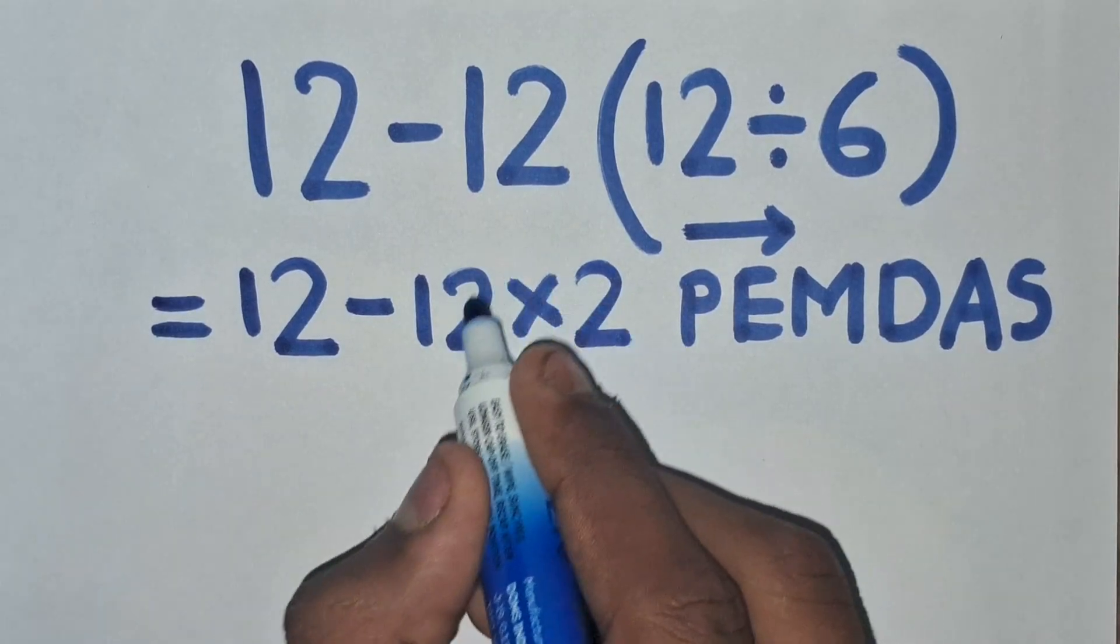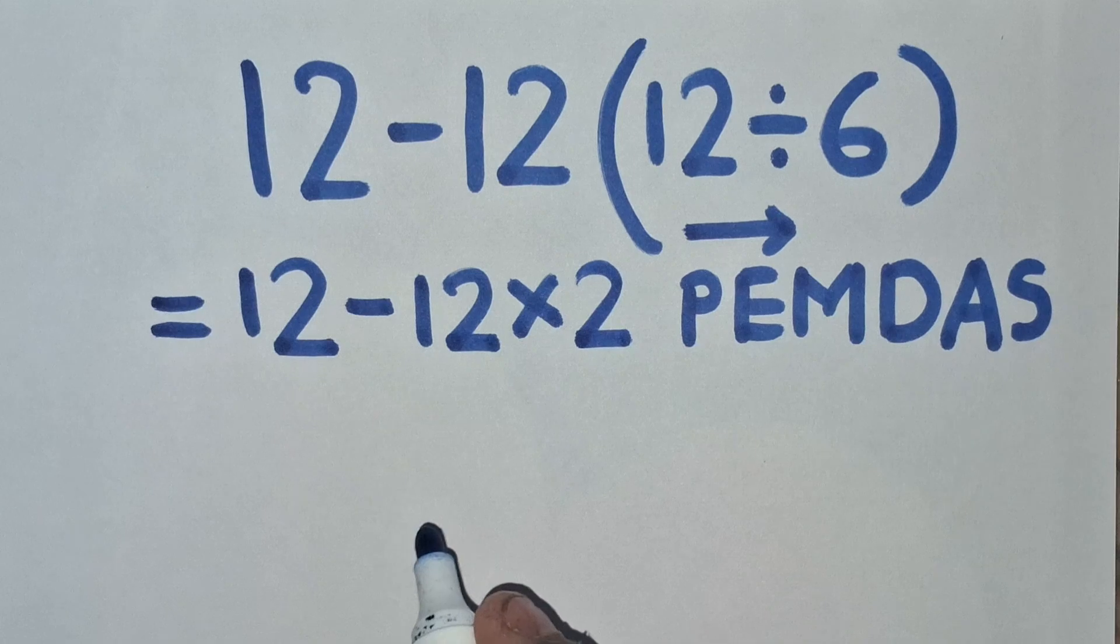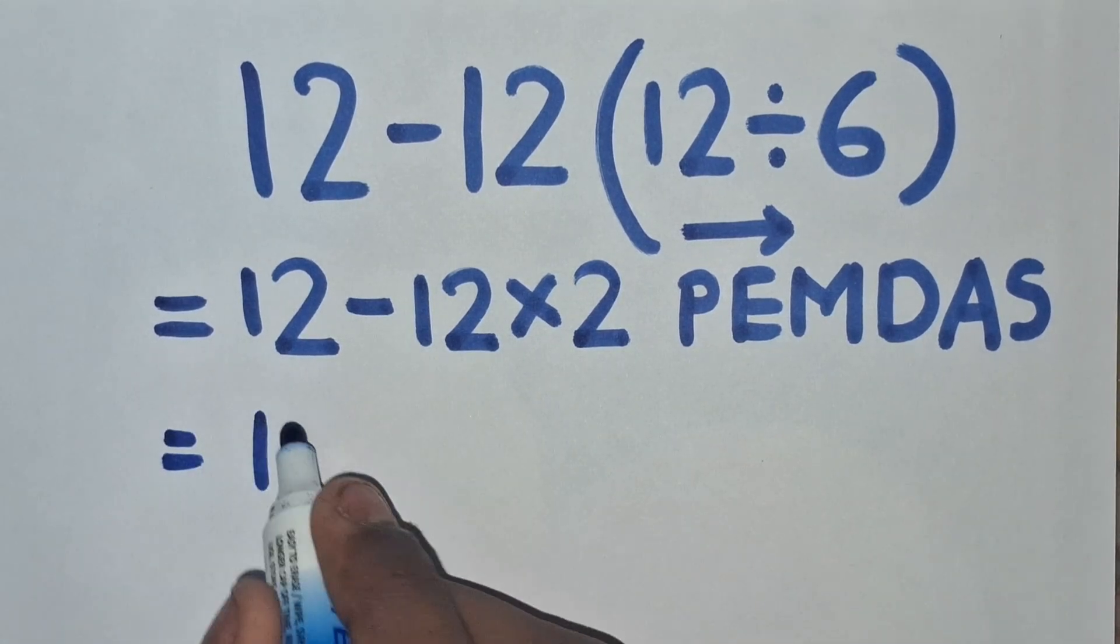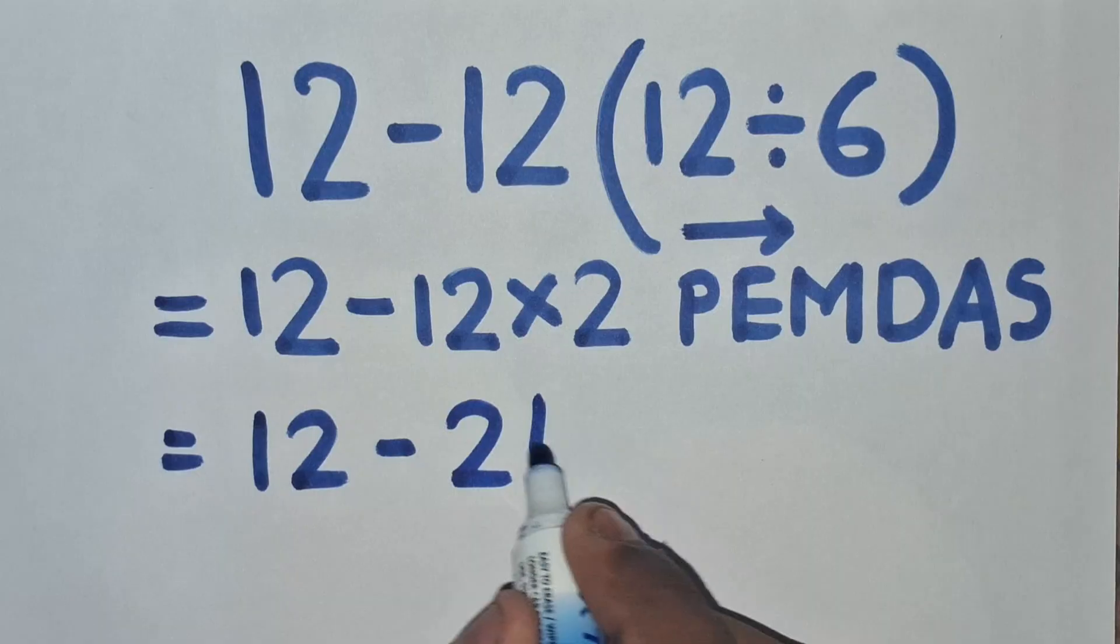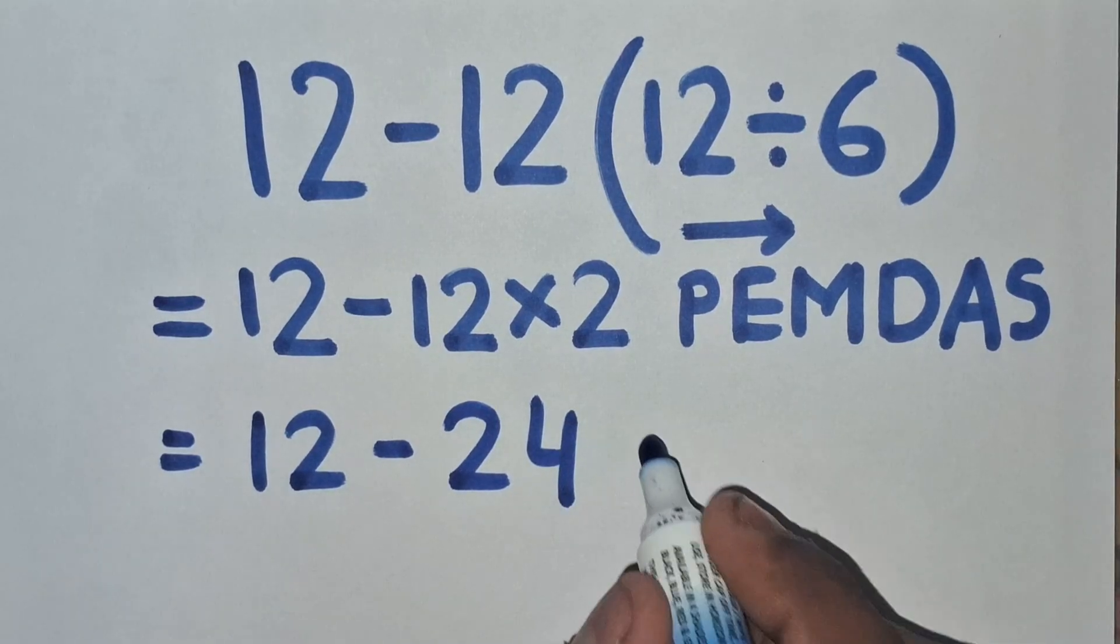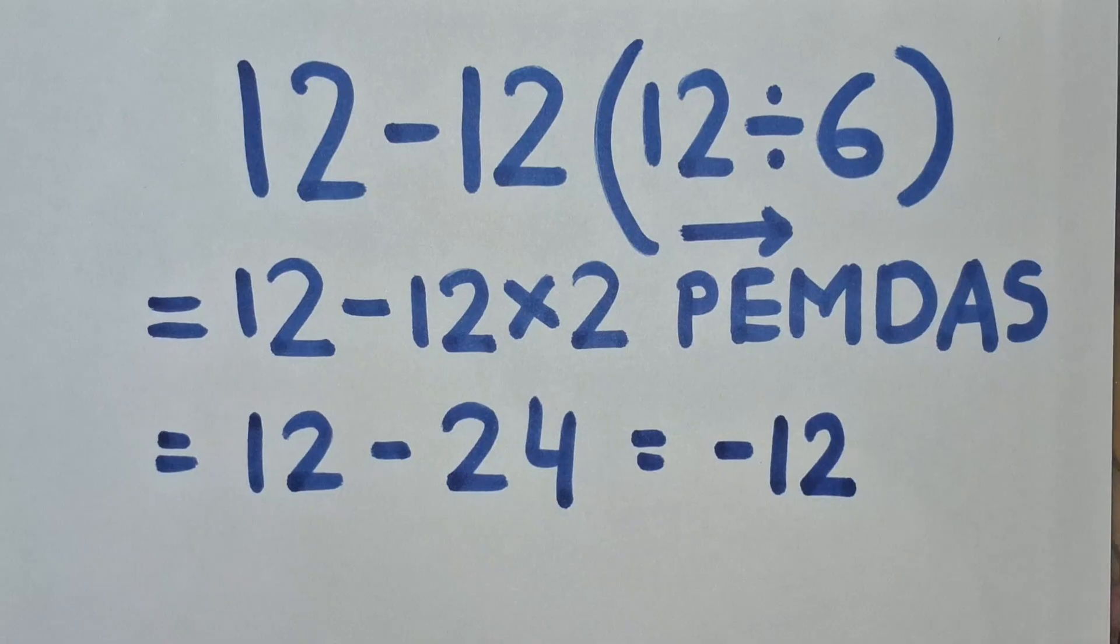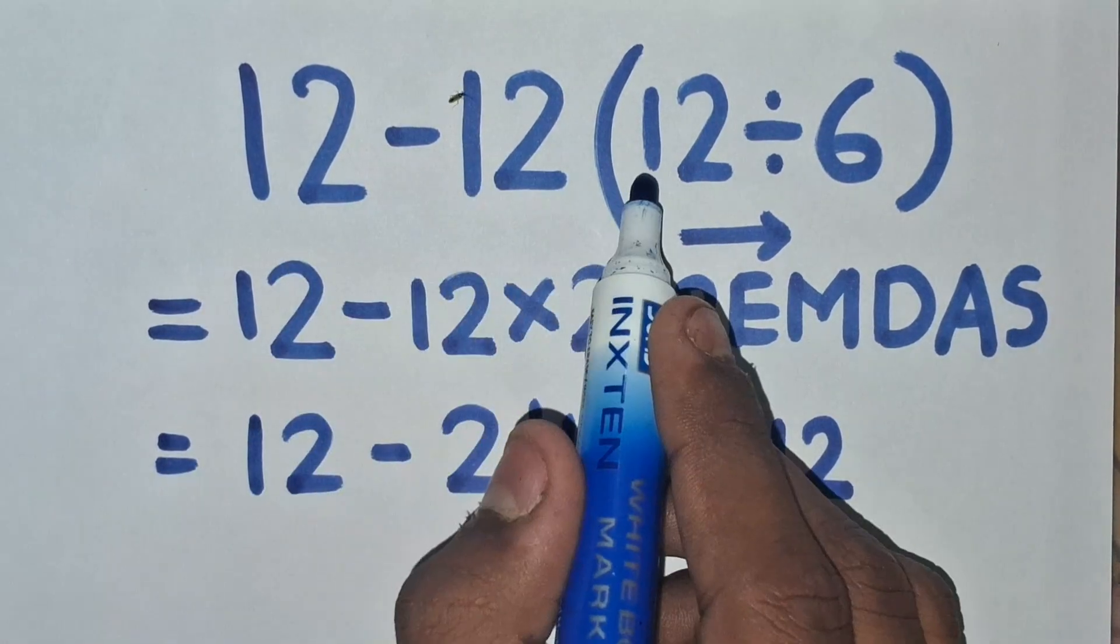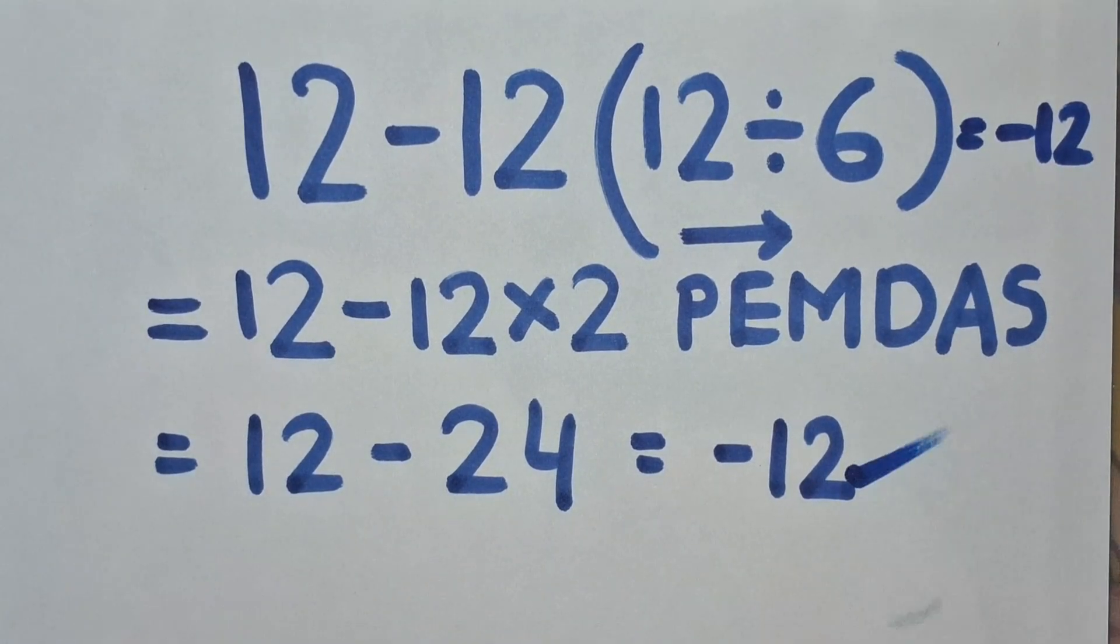We have to solve this multiplication before the subtraction. So 12 times 2 equals 24, then 12 minus 24 equals negative 12. Finally, 12 minus 12 times 12 divided by 6 equals negative 12.